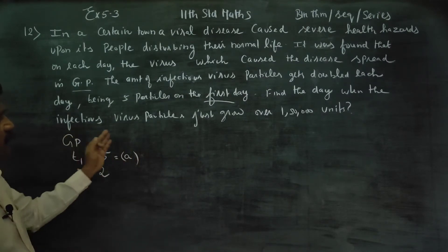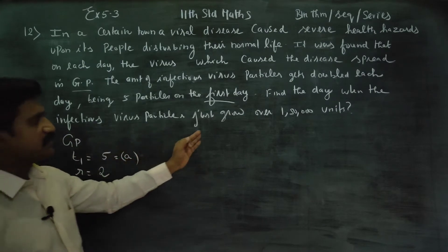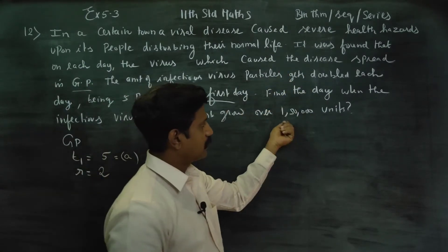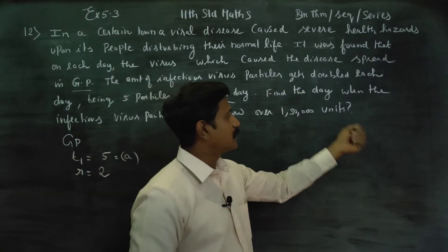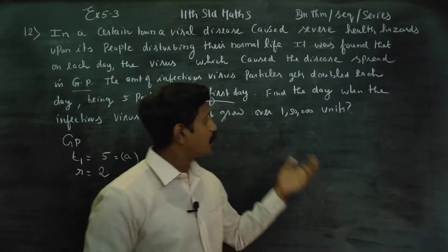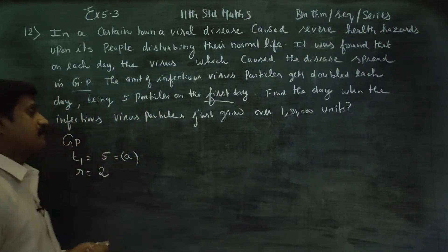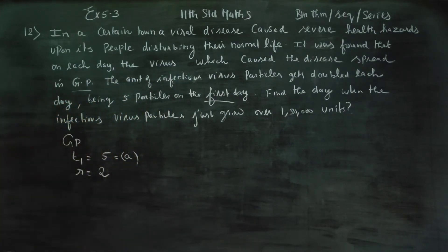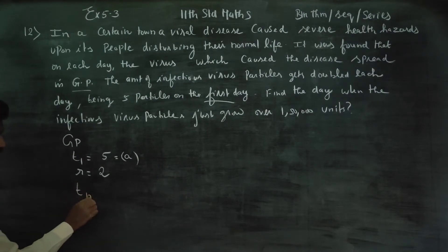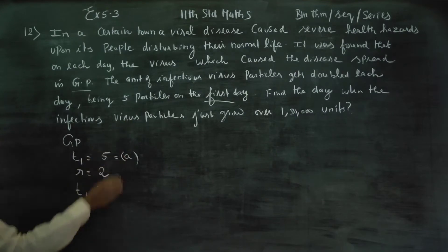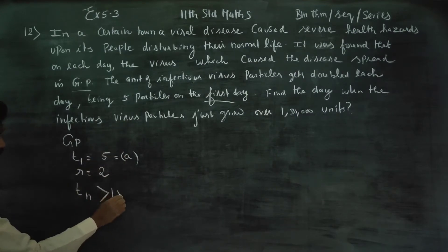Find the day when the infectious virus particles just grow over 1,50,000 units. So the question asks: find n such that Tn is greater than 1,50,000.